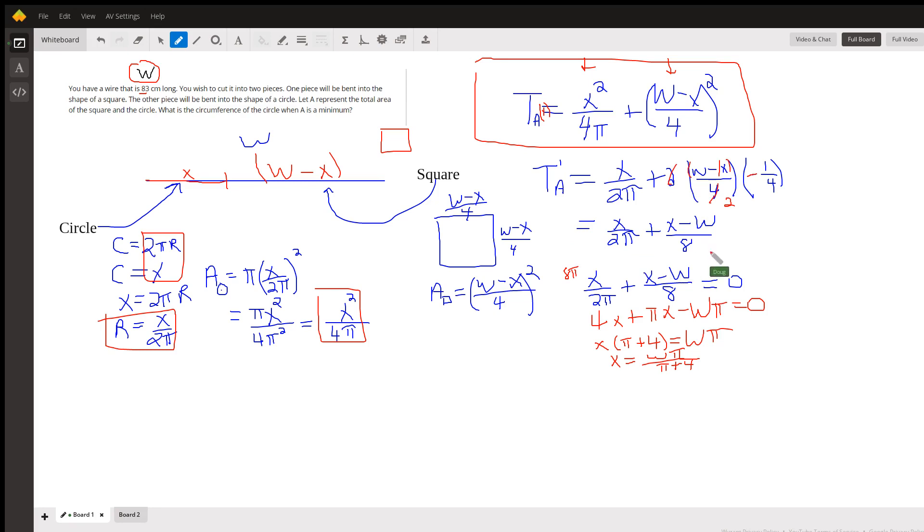So we want to know when does that first derivative equal zero. I choose to multiply every term by 8π to clear the equation of fractions. I get 4x plus πx minus Wπ equals zero. Solving for x, I get Wπ over the quantity π plus 4. That's the critical number.